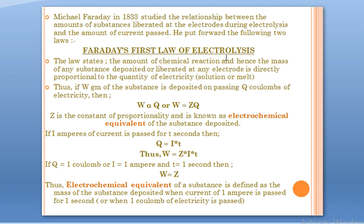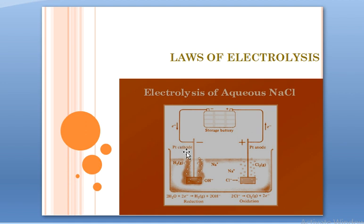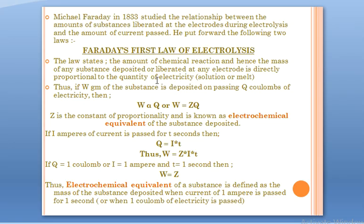Faraday's first law of electrolysis: the amount of chemical reaction, and hence the mass of any substance deposited or liberated at any electrode, is directly proportional to the quantity of electricity passed through the electrolyte — whether aqueous solution or molten state. So if w grams of substance is deposited on passing q coulombs of electricity, then w is directly proportional to q, or w = zq.